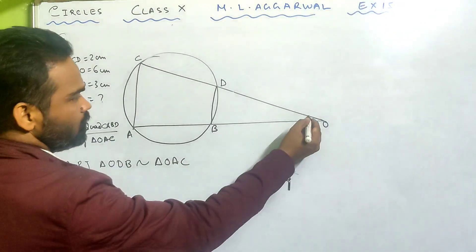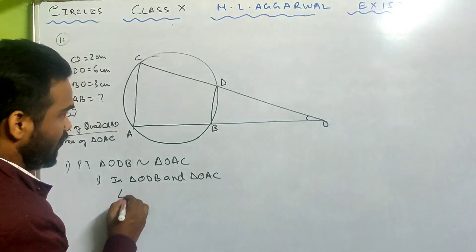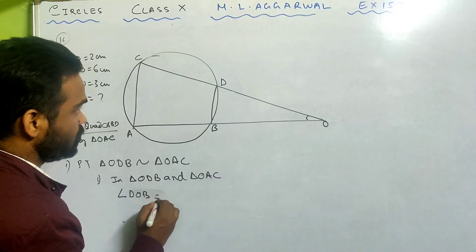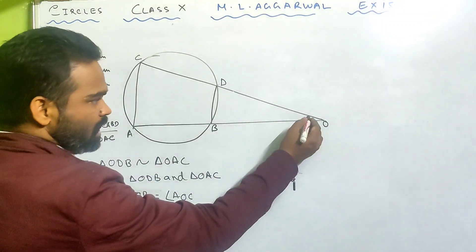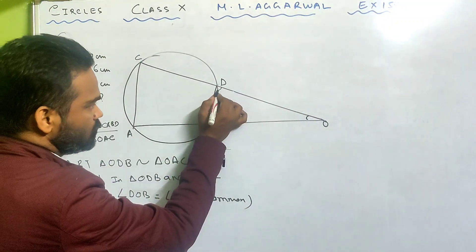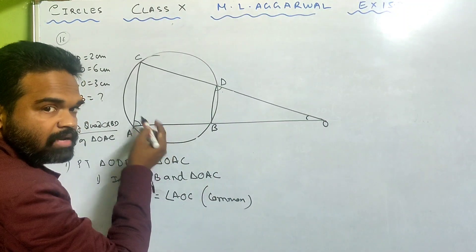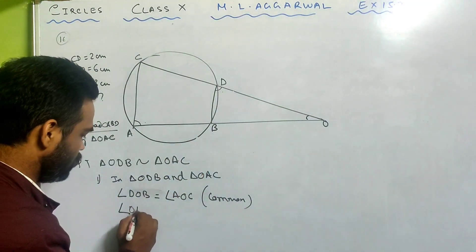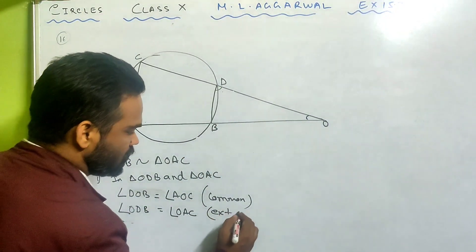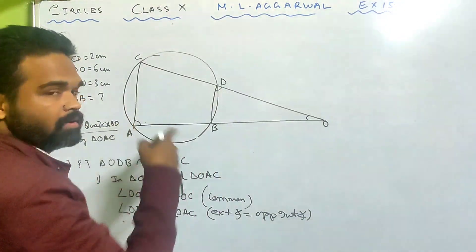Very easy. In triangle ODB and triangle OAC, angle DOB equals angle AOC — this angle is common. Number 2: this angle and this angle are equal because ABDC is a cyclic quadrilateral and the exterior angle equals the opposite interior angle. So I can say angle ODB equals angle OAC — exterior angle equals opposite interior angle in case of a cyclic quadrilateral. And ABDC is a cyclic quadrilateral.